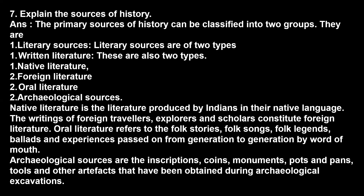Next question: Explain the sources of history. Answer: The primary sources of history can be classified into two groups: literary sources and archaeological sources. Literary sources are of two types: written literature and oral literature. Under written literature, we have two types: native literature and foreign literature. Native literature is the literature produced by Indians in their native language. The writings of foreign travelers, explorers, and scholars constitute foreign literature. Oral literature refers to the folk stories, folk songs, folk legends, ballads, and experiences passed on from generation to generation by word of mouth.